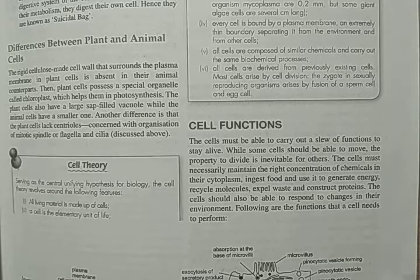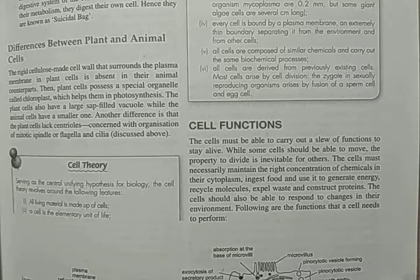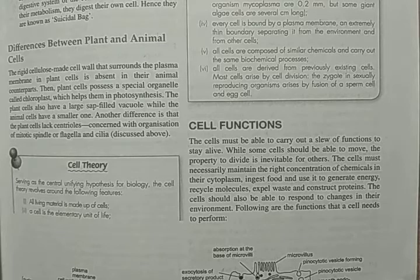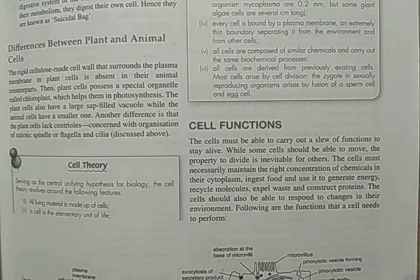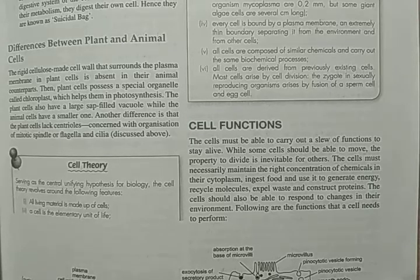While some cells should be able to move, the property to divide is inevitable for others. The differences between plant cells and animal cells are not all about structure. Some cells are able to move, and they also maintain the right concentration of chemicals in their cytoplasm.